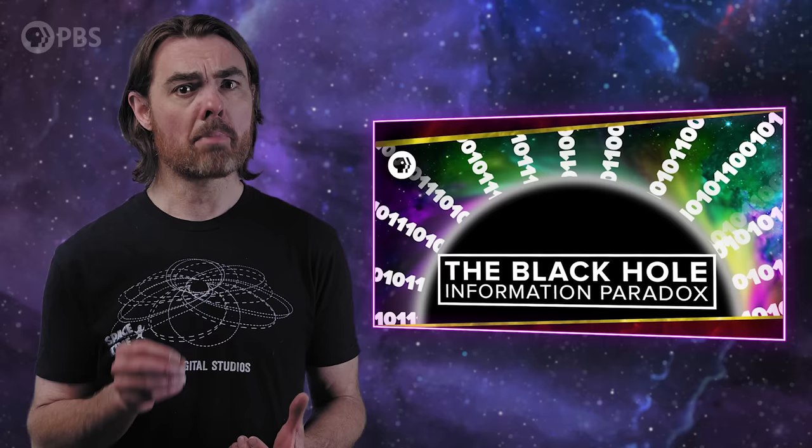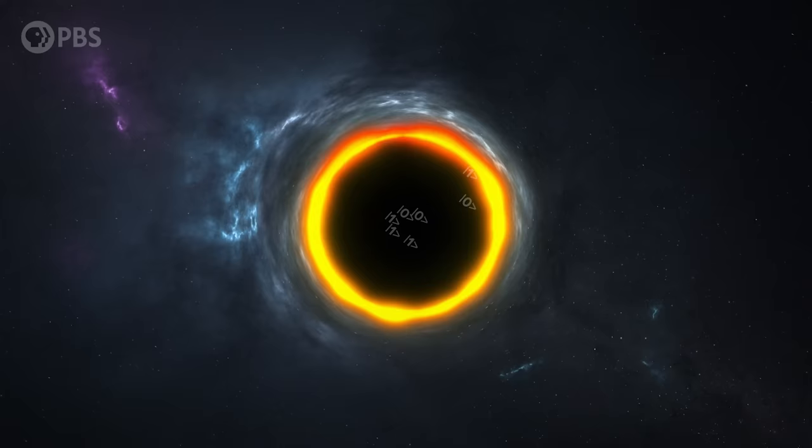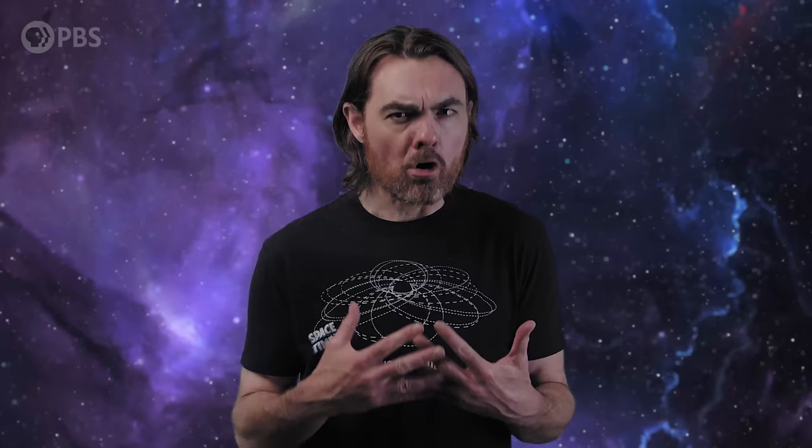Feel free to have a look at our original video on the paradox, but it's not essential for understanding this new angle. A little review from me should be enough. Stephen Hawking discovered that black holes aren't quite as black and inescapable as we thought. They radiate, and this Hawking radiation causes them to slowly evaporate. But that means that all of the information that went into making the black hole is erased from the universe. This conflicts with the law of conservation of quantum information, which is a non-negotiable constraint of quantum mechanics.